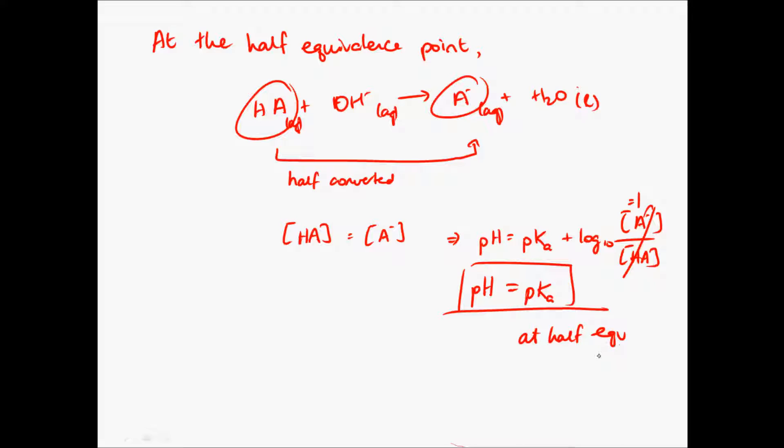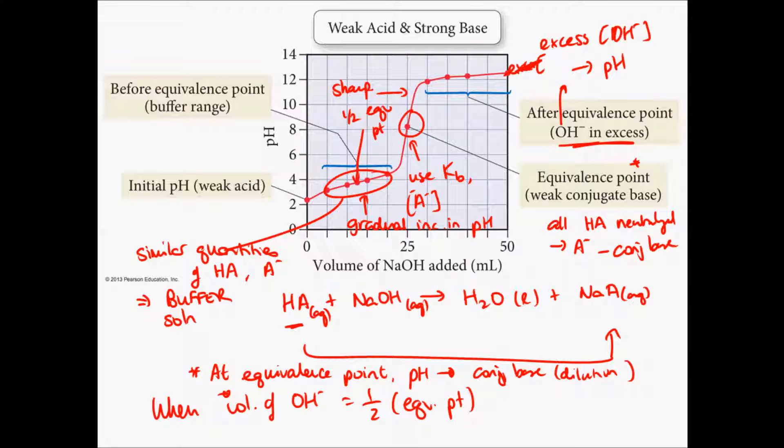There's one last comment I forgot to make earlier. In a weak acid strong base titration, you will also see that at the equivalence point, because it's a conjugate base here, the pH is greater than 7.